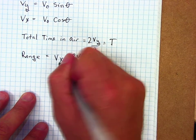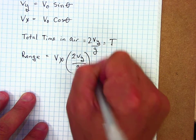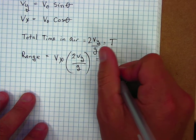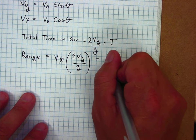Times your v_x. That gives you the range.